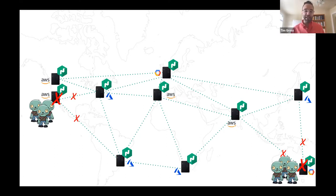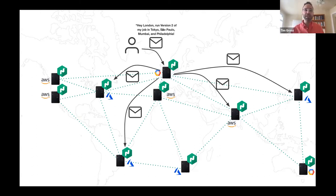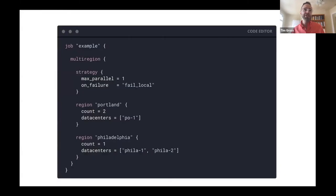Federation lets you connect to one region with your command line client or web browser and have it forward your messages to another region. But when you're running a lot of federated Nomad regions, it's hard to keep them in sync. If you want to run version two of your application in a subset of your regions, you need to manually deploy to each one or write scripting. It gets harder if you want to deploy to one region first, verify it's working, then deploy to the rest — and you need to handle what happens if a region fails during deployment. Those are the kinds of problems users with large multi-region Nomad deployments were bringing to us.